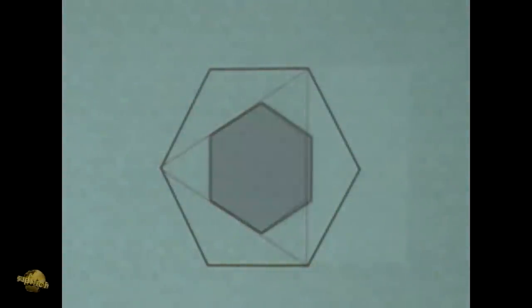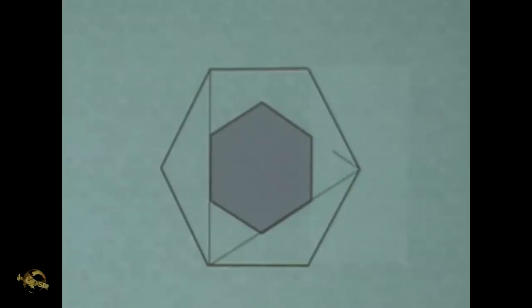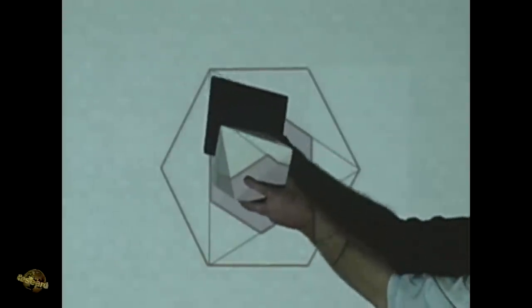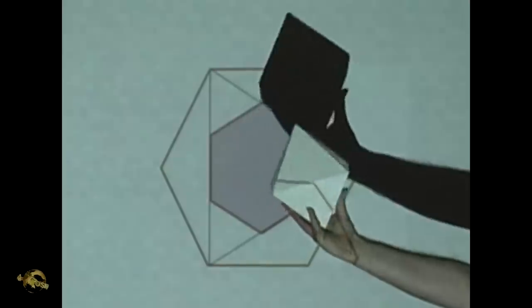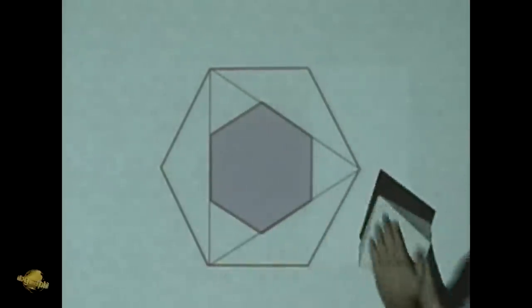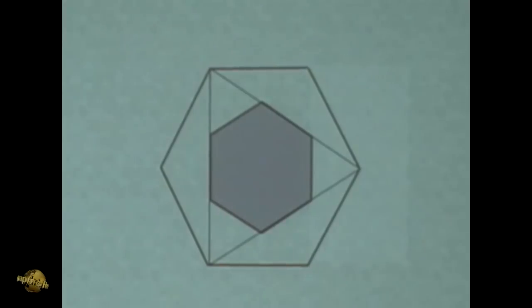Once you learn to deal with these figures in two dimensions, you realize that concealed within the two-dimensional is the potential for the three-dimensional. Here, if you look at this in a certain way, you should be able to see the octahedron. If I turn this a certain way, here's one of the equilateral triangles that make up the face of the octahedron.